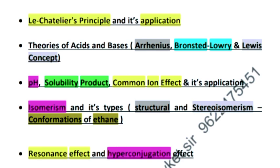Similarly theories of acids and bases: Arrhenius concept, Bronsted-Lowry concept and Lewis concept. Here you will remember the amphoteric species, their limitations. You have to practice pH numericals.